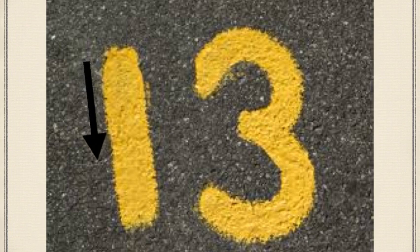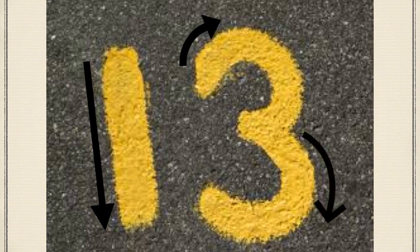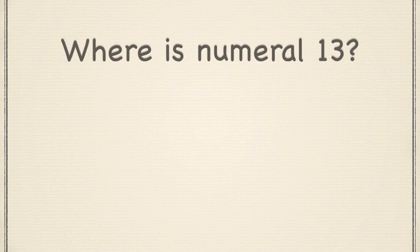When you write numeral 13, first you write a straight line going down. This is for the one. Then you go around, stop, and around again, and this is for the three. Thirteen. Let's identify numeral 13.